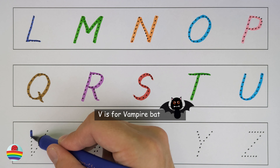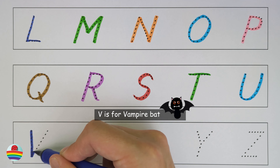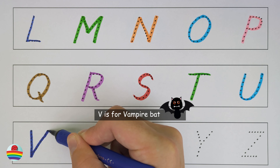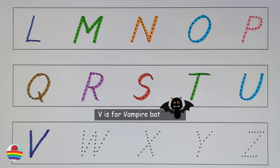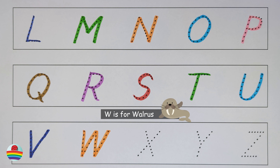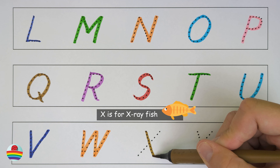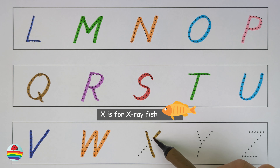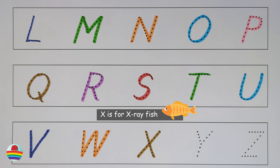V. V is for vampire bat. W. W is for walrus. X. X is for x-ray fish.